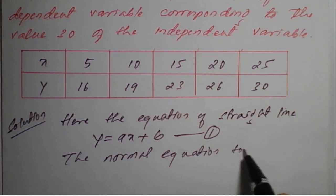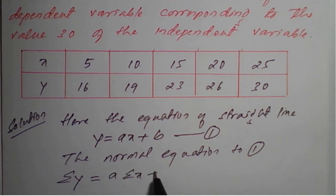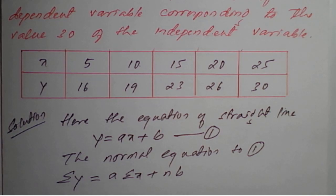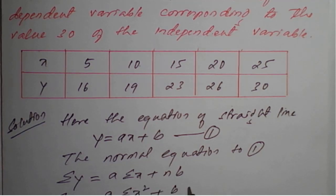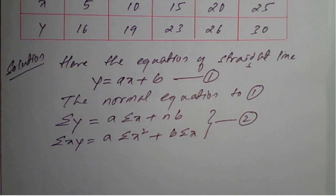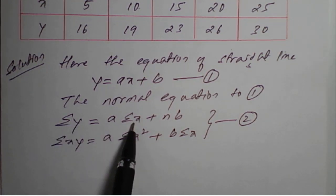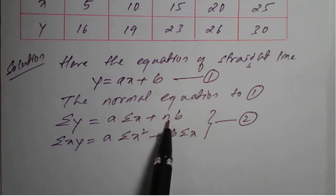Summation y is equal to a into summation x plus n into b. And multiply x to this, so summation xy is equal to a into summation x square plus b into summation x. With the help of this, we need to prepare the values of summation y, summation x, summation xy, summation x square, and the value of n.